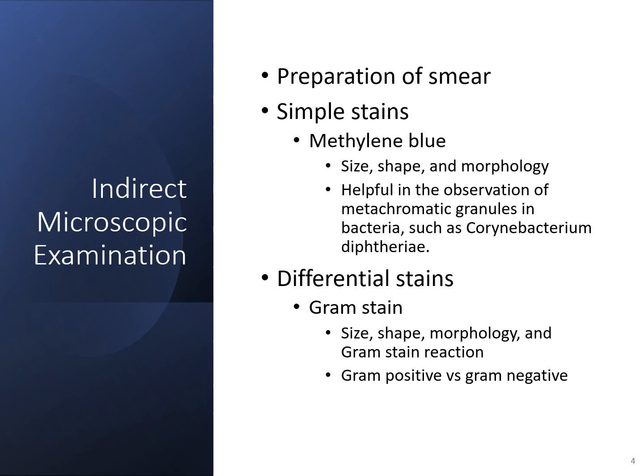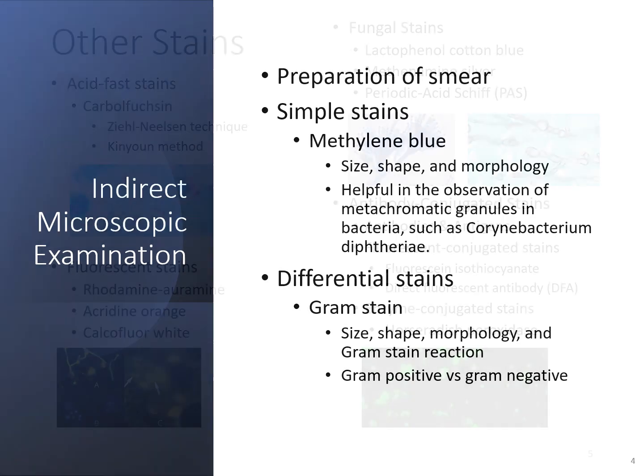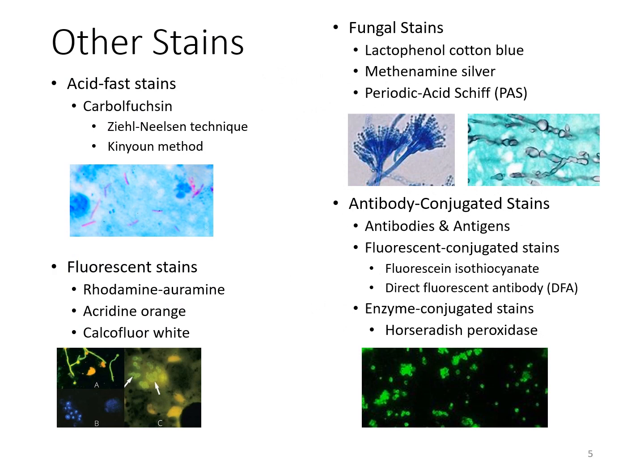Other stains used in microbiology include acid fast stains. If you're looking for bacteria with a thicker or waxy type of cell wall that won't retain the gram stain properly, those would be considered acid fast bacteria and require a special stain. Most acid fast stain images have a greenish teal background with the organism itself staining a bright pinkish-red color.